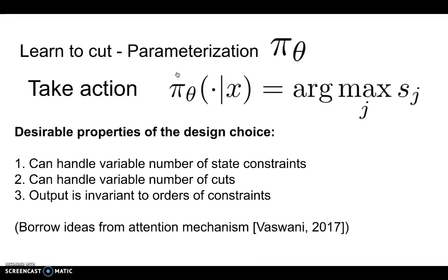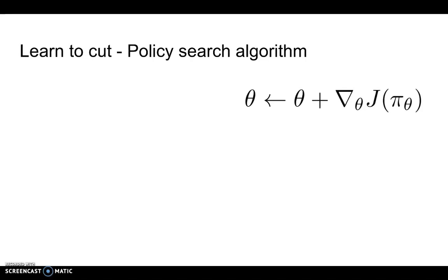Although there are many other ways of carrying out the parameterization, we list several desirable properties of the current design choice. The current architecture can handle a variable number of state constraints, constraints that are already in LP. It can handle variable number of cuts, and the output is invariant to the orders of the constraints.